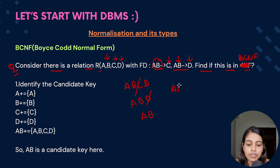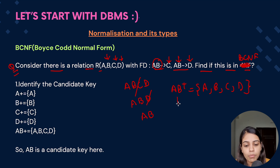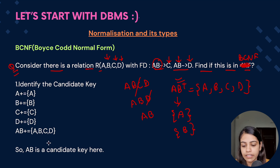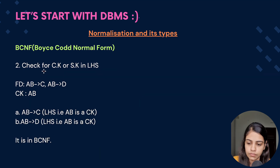Now we take the closure of AB, which gives us A, B, C, and D. There is no proper subset of AB that gives all the attributes, so AB is a candidate key.